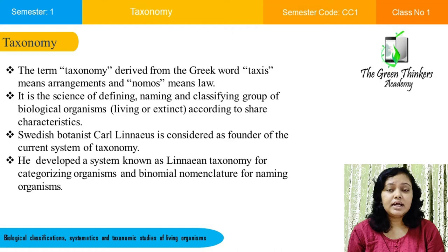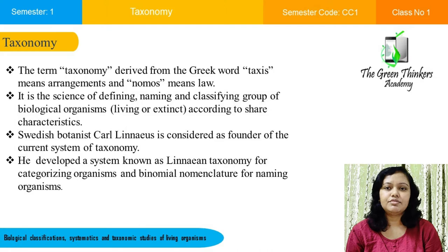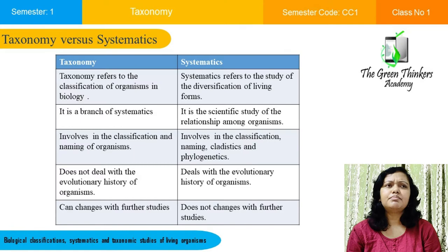Taxonomy is basically a term derived from two Greek words: taxis meaning arrangement and nomos meaning law. So taxonomy is the study of identifying, naming, and classifying a group of organisms based on their shared characteristics. The father of modern taxonomy, Linnaeus, first developed a linear classification system and a binomial nomenclature system for naming living organisms.